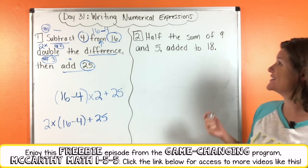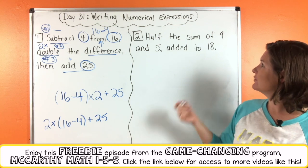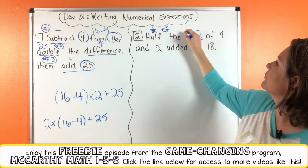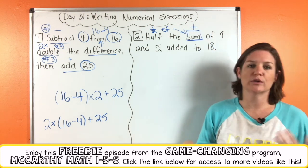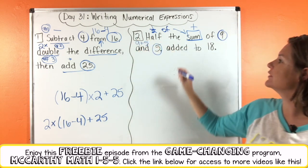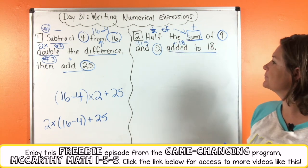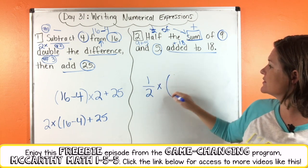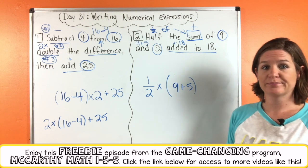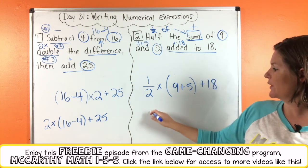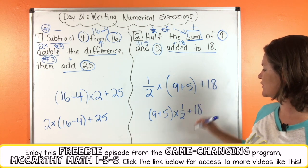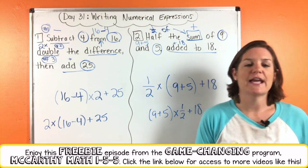Let's try number 2. It says half the sum of 9 and 5 added to 18. So we're taking half of the sum — the sum of 9 and 5 — then adding 18. So we need half of (9 plus 5), then add 18. Another way to write this would be (9 plus 5) times one half plus 18, because we're still finding half of the sum and then adding 18.